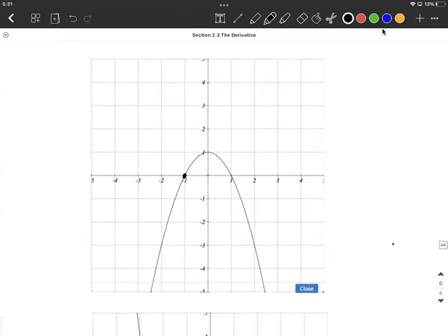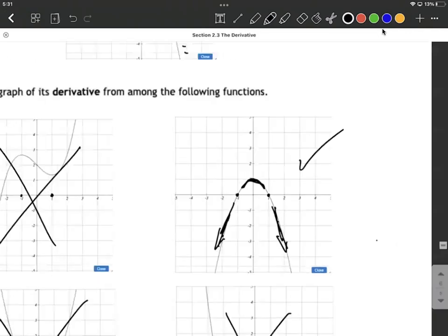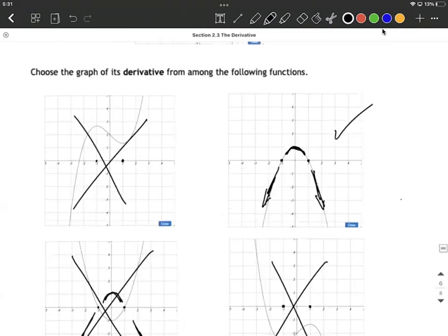Finally, taking a look here, the x-intercepts are in the right place. Drawing below the x-axis to the left and to the right, above the x-axis in the middle. That means this has to be the graph of our derivative function.